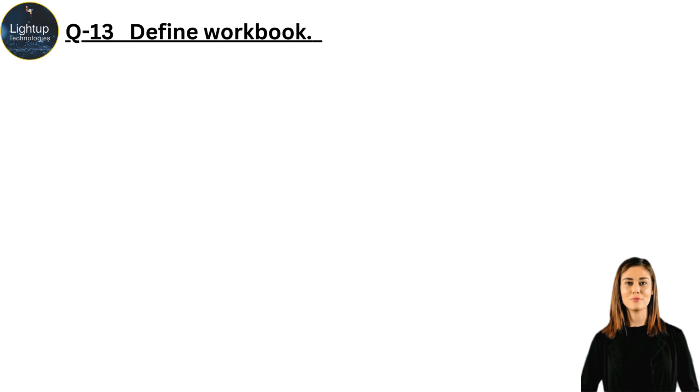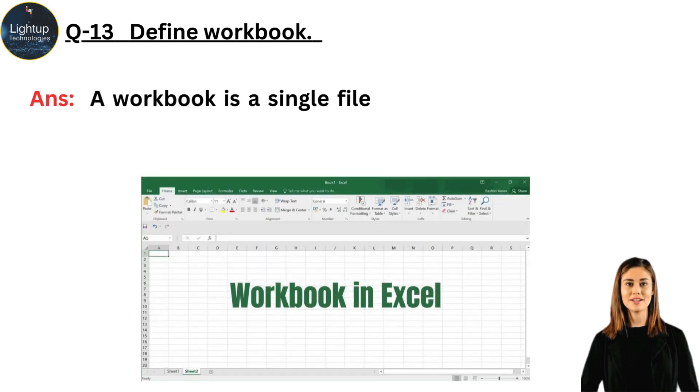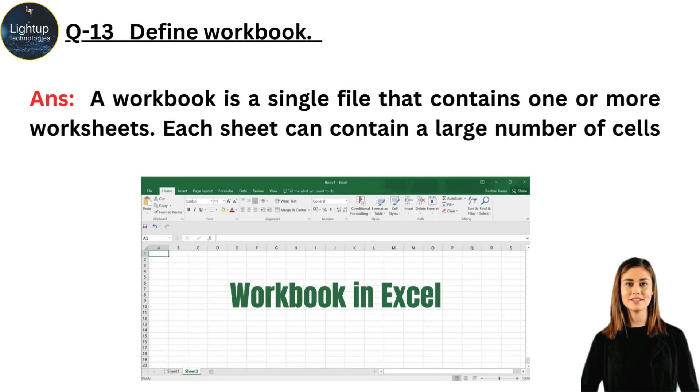Define workbook. A workbook is a single file that contains one or more worksheets. Each sheet can contain a large number of cells organized into rows and columns.